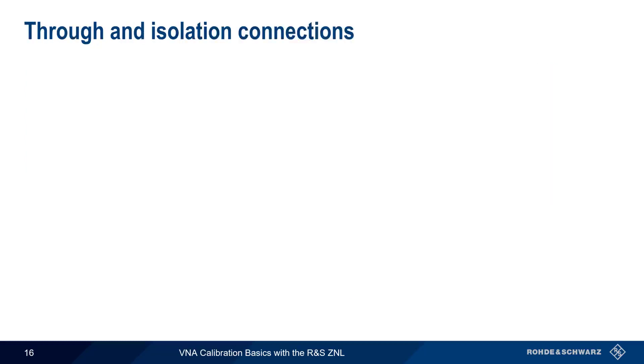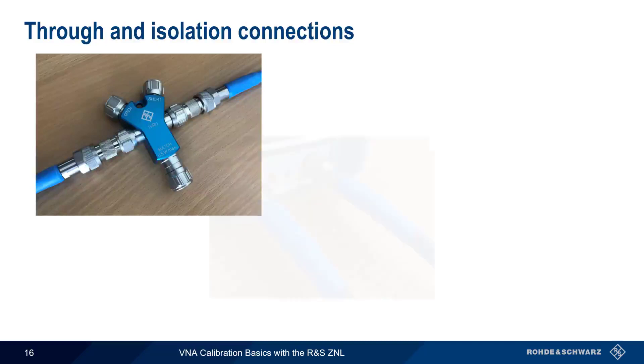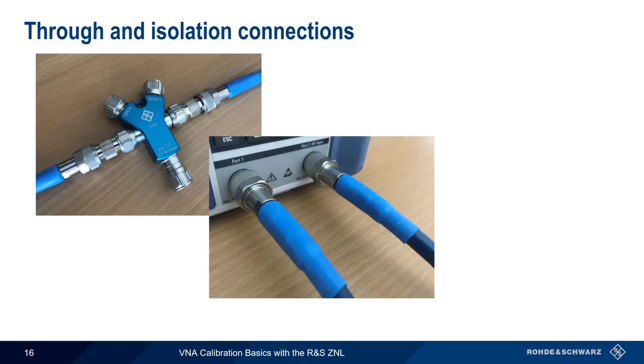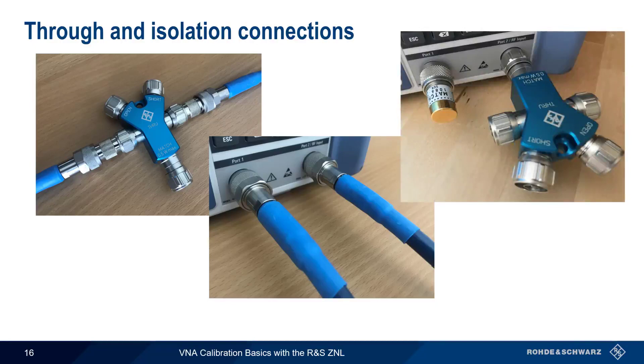The connections for open, short, and match in a two-port calibration are the same as for a one-port calibration. Through standards have two connectors, one for each VNA port. For the isolation measurement, the port should be properly terminated. If you don't have a dedicated 50 ohm termination, you can also use a match calibration standard instead.